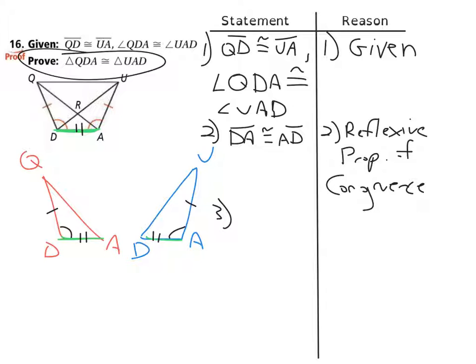is congruent to triangle UAD. How do we know that? Well, let's take a look at what we've got. We've got a side, then an angle, then a side - side, then an angle, and then a side. So what